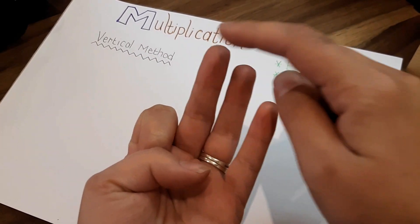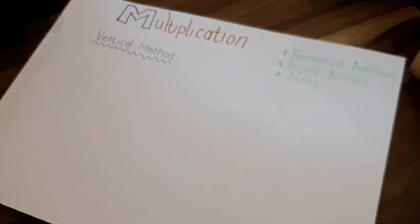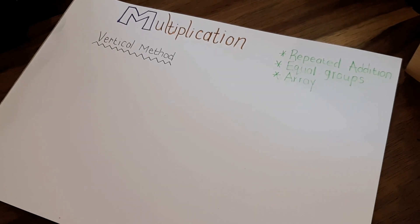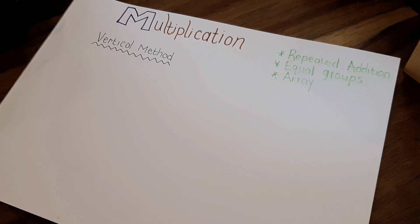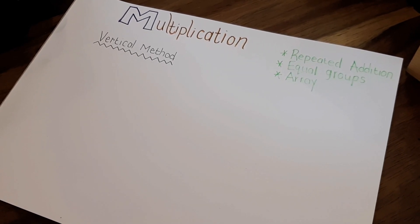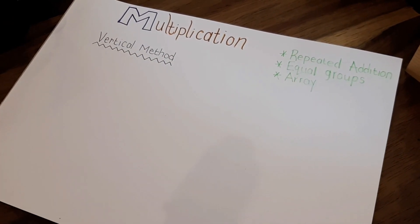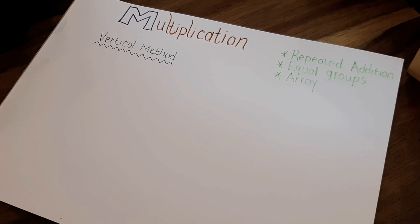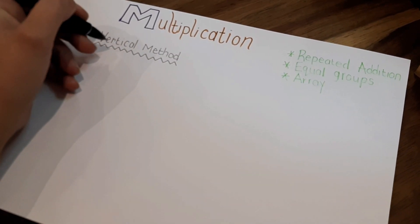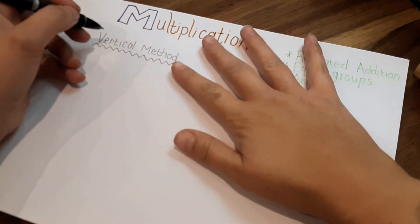We can also talk about it as an array. An array is like an egg carton or a slab of chocolates where you've got two rows and there's three in a row. Three times 2 is 6. So I'm going to start off with the vertical method.